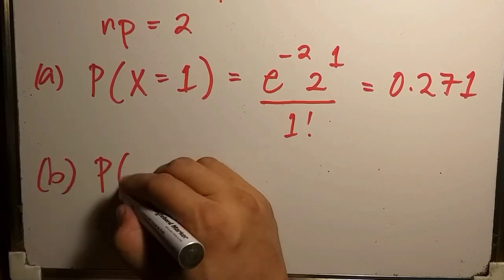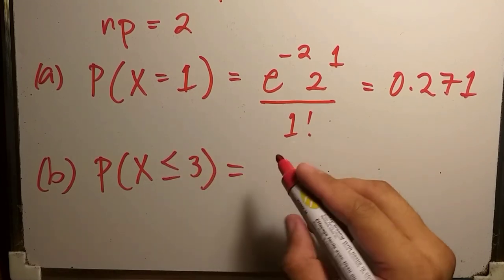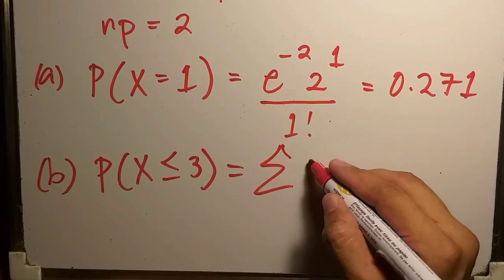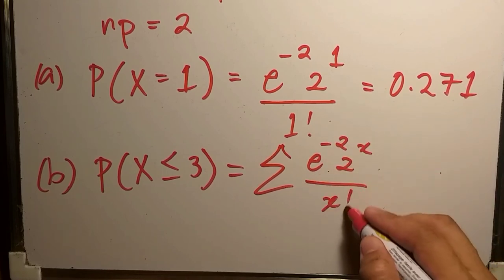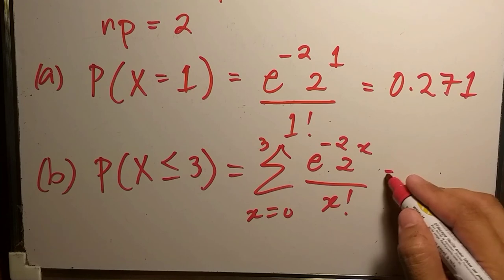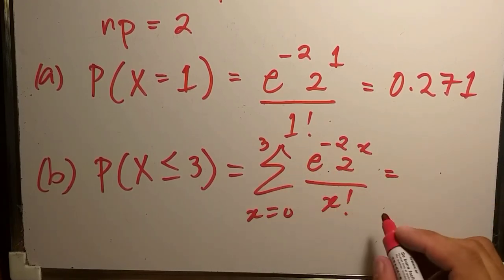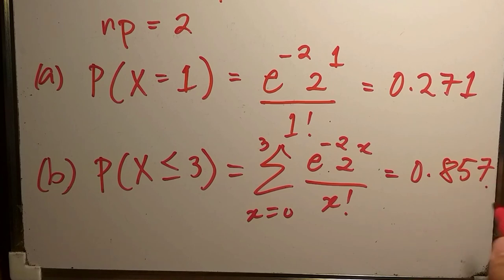For part (b), we need to find P(X ≤ 3), which equals the summation of e^(−2) · 2^x / x! for x from 0 to 3. Evaluating this gives us 0.857.